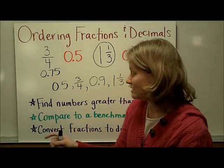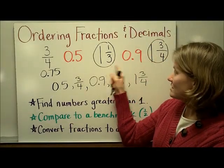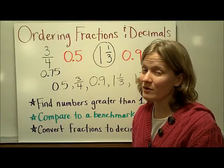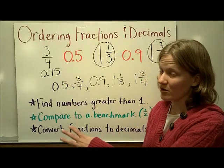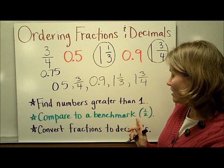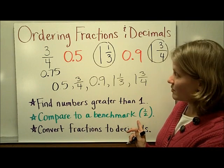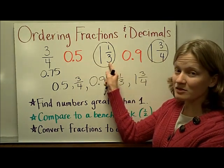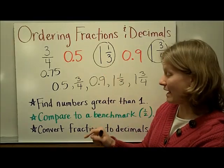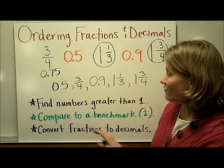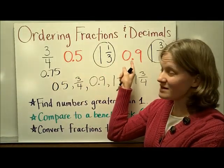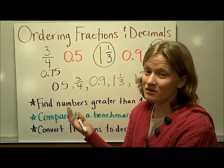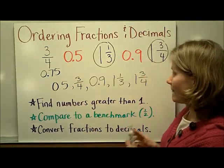Some of the strategies I used: first, zero in on numbers that are bigger than one whole and save them until you're done with the smaller ones. Second, compare to a benchmark — I compared the fractional parts of these mixed numbers to one half. And finally, convert fractions to decimals. If you have a lot of decimals, go ahead and convert whatever fractions are left into a decimal so they're easy to compare.